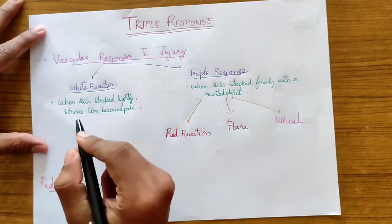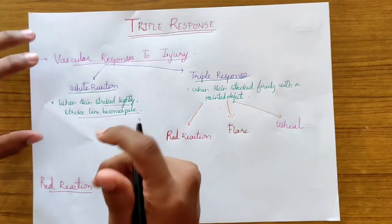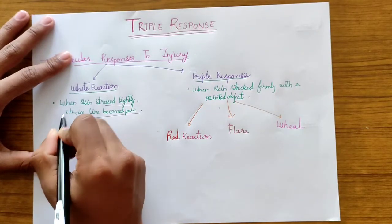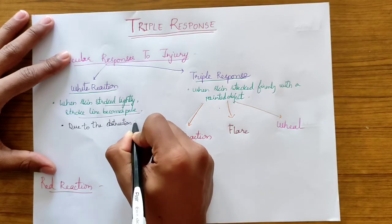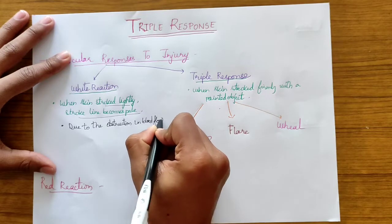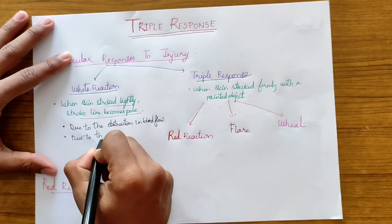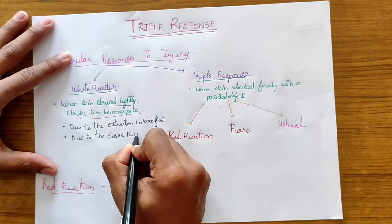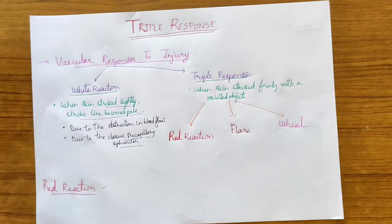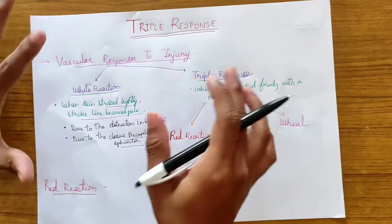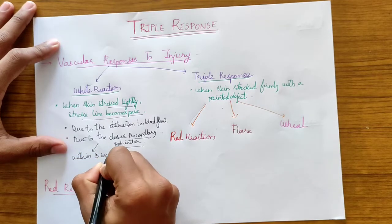So what is white reaction? When the skin is stroked lightly, the stroke line becomes pale — as you can observe when you scratch your skin lightly. This happens due to obstruction in the blood flow, which occurs due to the closure of the precapillary sphincter. When the precapillary sphincter closes, the blood flow is obstructed and the line becomes pale. This occurs within 15 seconds.